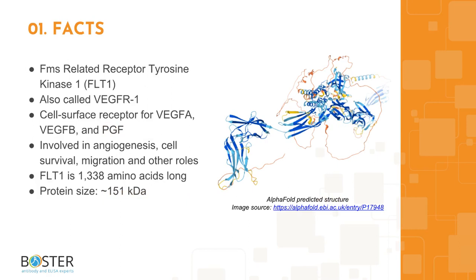Topic 1: Quick facts about FLT1. FMS-related receptor tyrosine kinase 1, or FLT1, is a cell surface receptor for VEGFA, VEGFB, and PGF. As such, it is highly involved in a number of processes such as angiogenesis, cell survival, cell migration, and many other crucial roles.